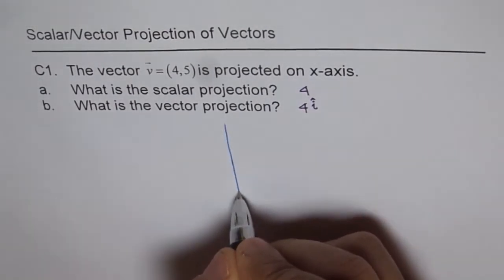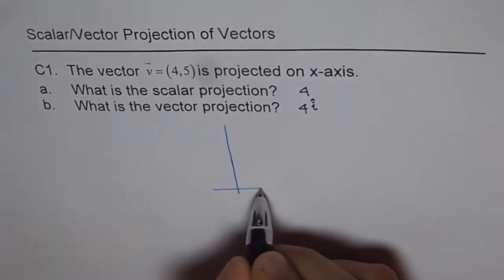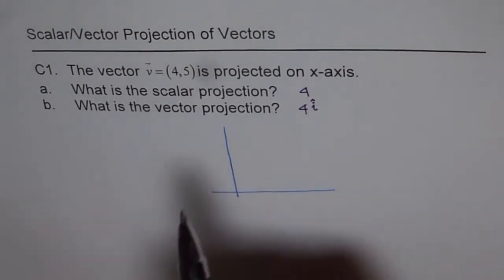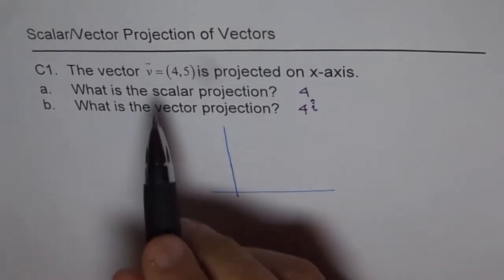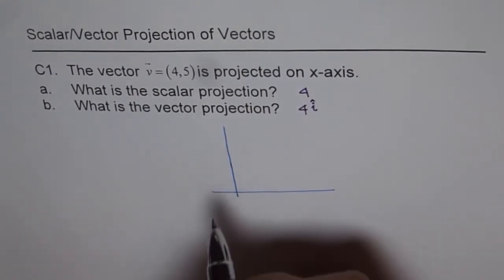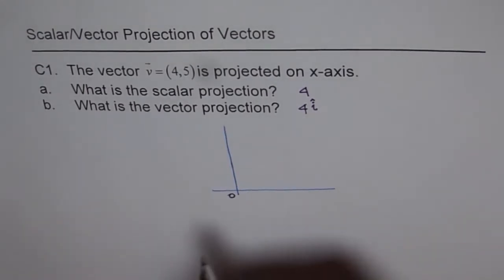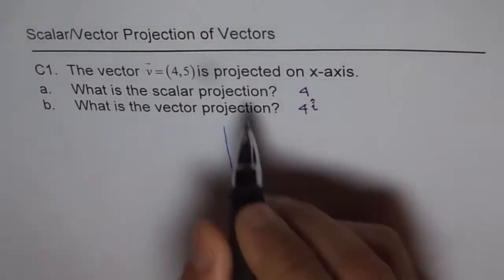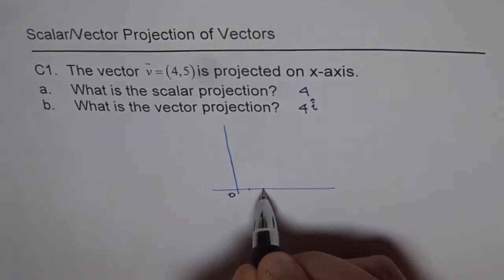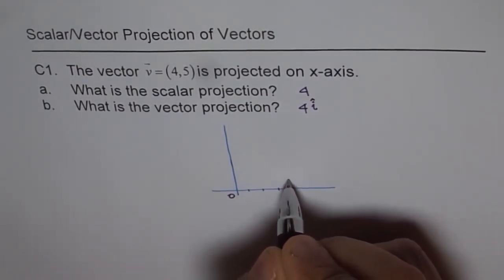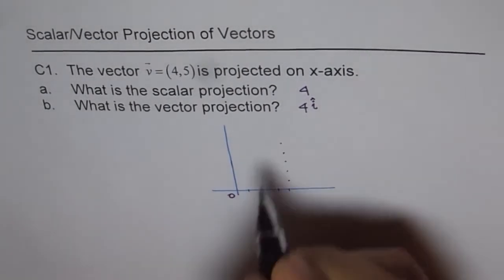When we have a vector V(4,5), then what it really is, it's a position vector which starts from origin zero. Along the x-axis it is 4: one, two, three, four units. Along the y-axis is 5 units: one, two, three, four, five.